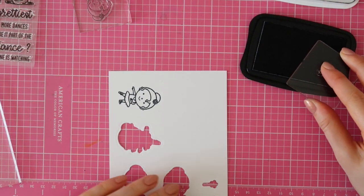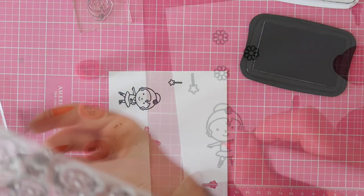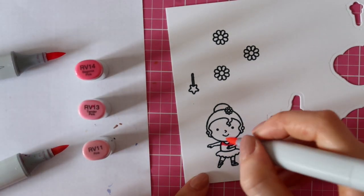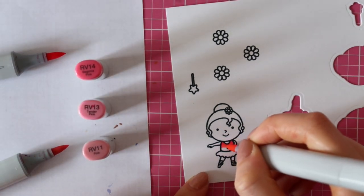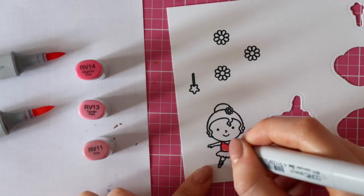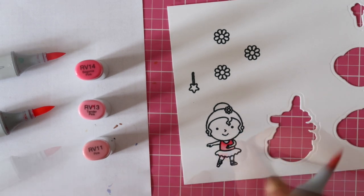Now that I finished my background, it's time to stamp some images from the Tiny Dancers stamp set from Sunny Studio. I stamped my images using Memento Tuxedo Black ink onto some Neenah Solar White 110 pound cardstock. For the little ballerina's outfit, I am using RV14, RV13 and RV11.